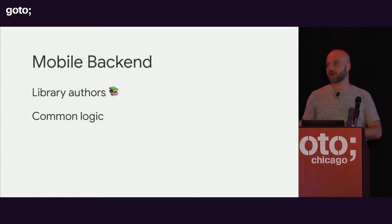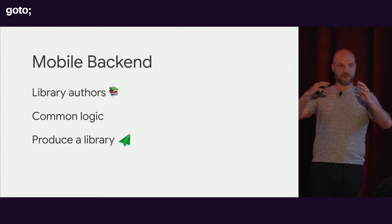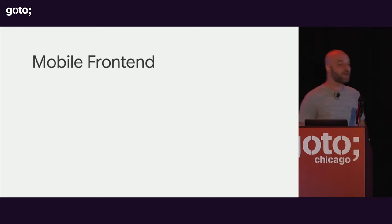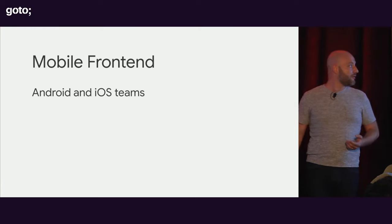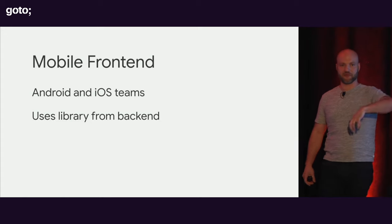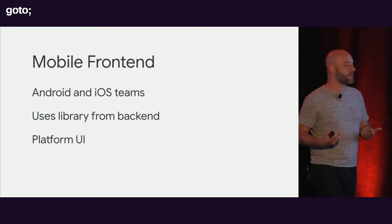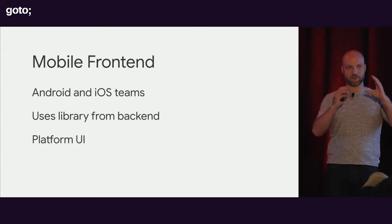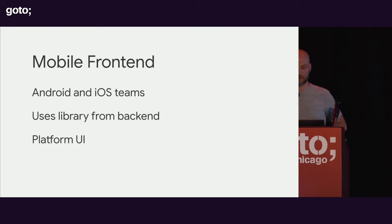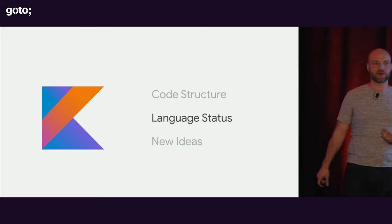The mobile backend team is basically responsible for all of the common logic between the two platforms, which of course must be reliable. They're going to create a bunch of Kotlin code, that's going to go into some CI system, and it's going to produce a library that can be consumed by the other two teams. The Android and iOS front-end teams will depend upon that library for any interaction with the data layer, rely on it having an API that works for their use case, and then they'll be responsible for making all the platform UI code — putting views on the screen and creating a polished user experience.